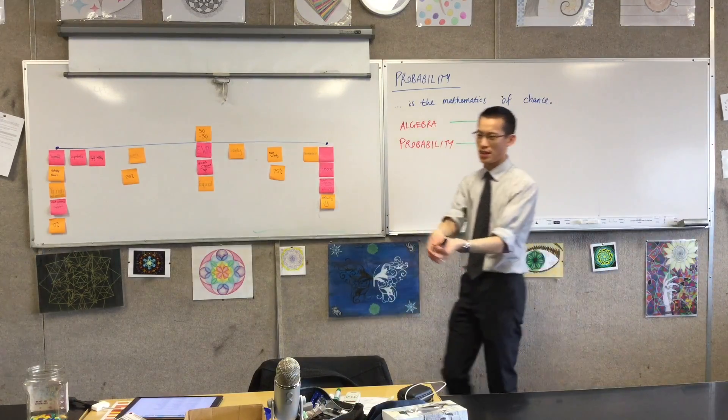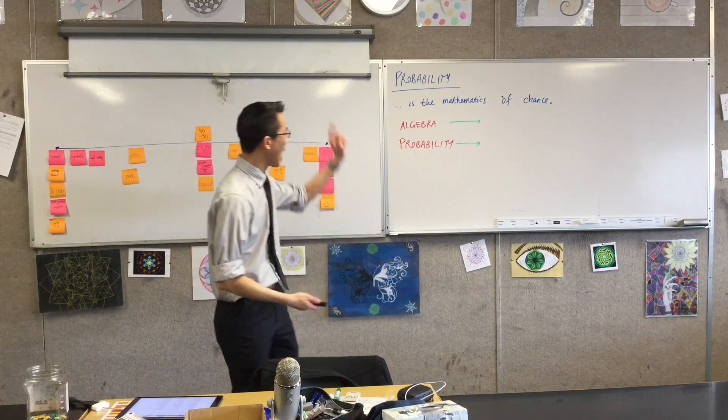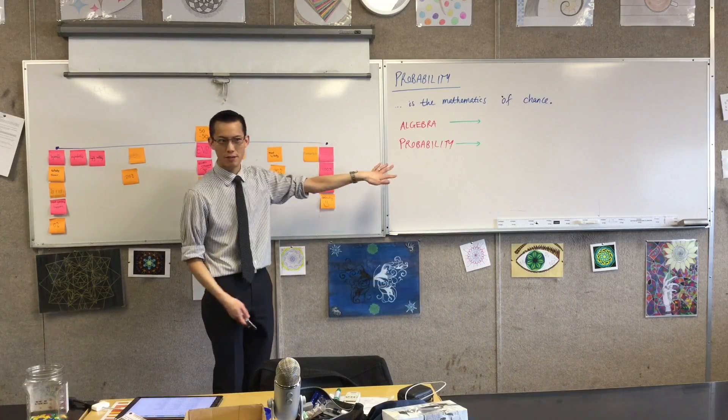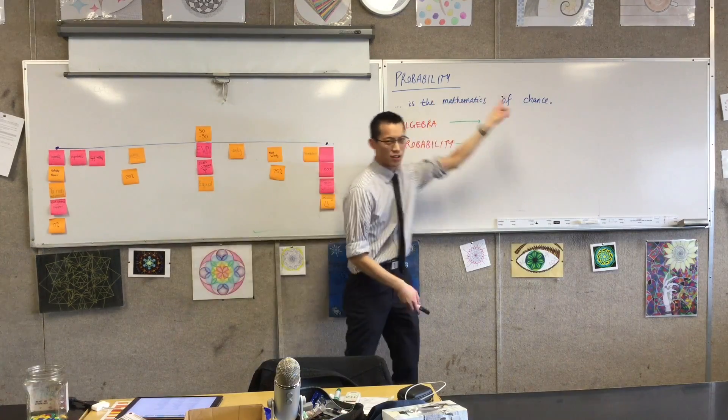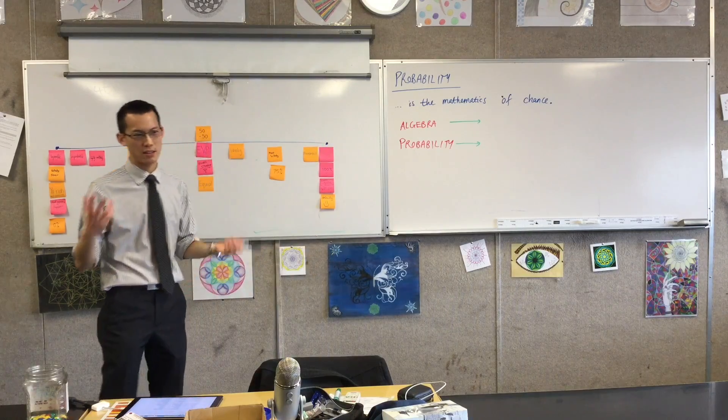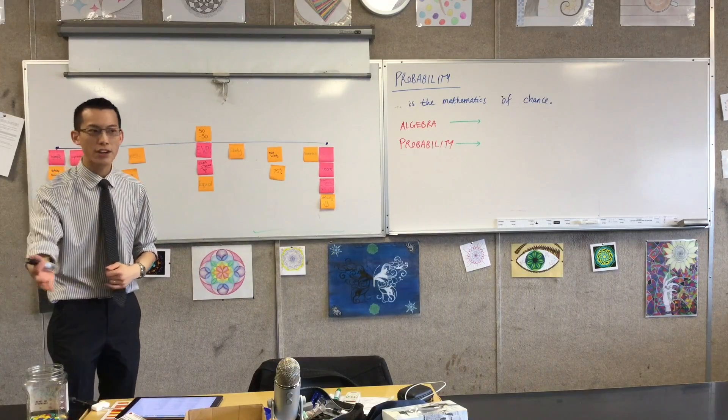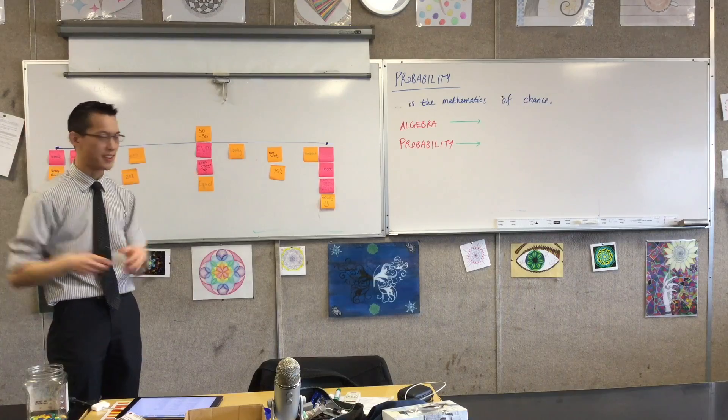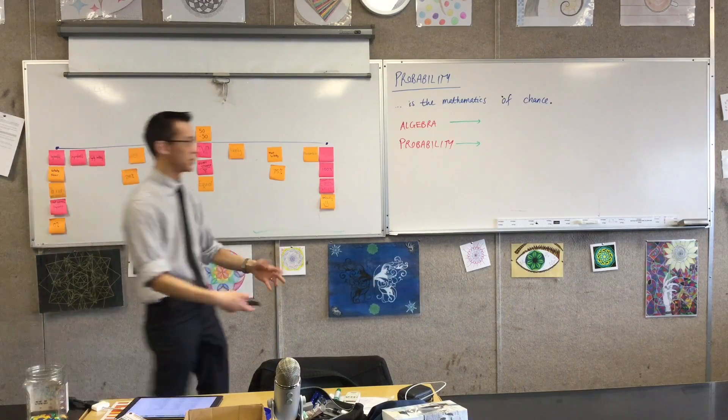So what I want to try and do is draw a parallel between algebra and probability. Do you remember, algebra is the mathematics of something. Do you remember what it was? Why did we introduce x's and y's and pronumerals? Because we don't know. Yeah, very good. So the technical way to say it is it's the mathematics of unknown numbers.